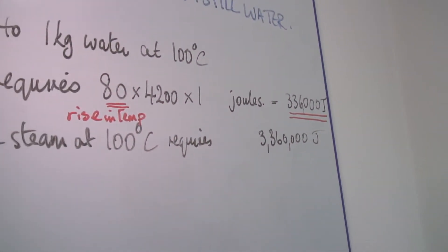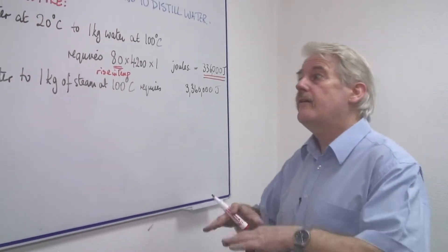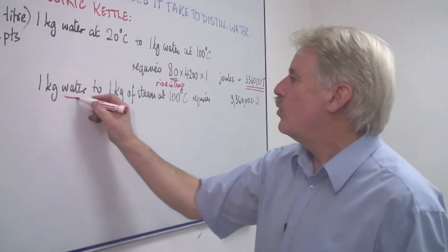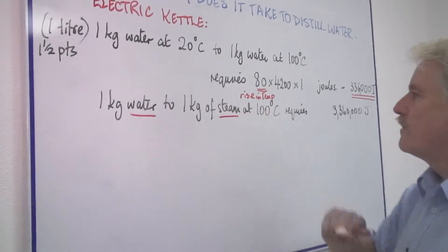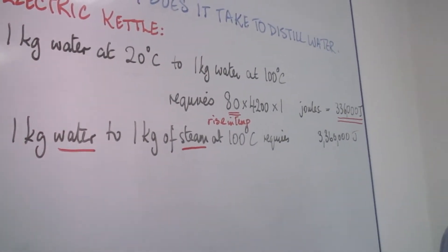Now we've got the water boiling, but it isn't distilled yet. To distill water we have a different problem. We're turning it into steam. We're vaporizing it. And believe it or not, this takes a lot of energy.